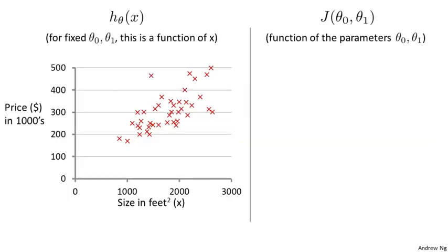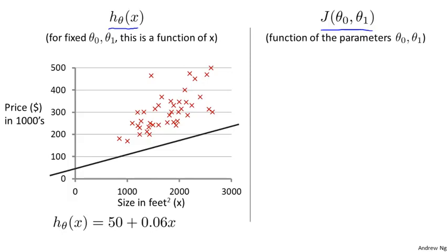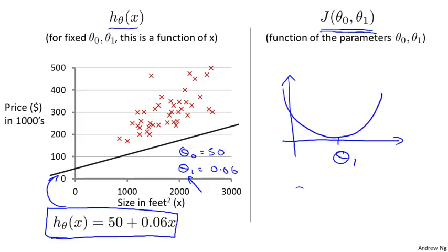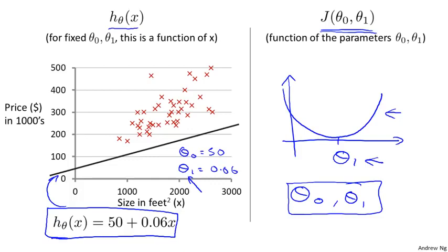Same as last time, we want to understand the hypothesis h and the cost function j. Here's my training set of housing prices, and let's pick some hypothesis — this is not a particularly good hypothesis, but if I set theta 0 equals 50 and theta 1 equals 0.06, then I end up with this hypothesis, which corresponds to that straight line. Given these values of theta 0 and theta 1, we want to plot the corresponding cost function on the right. When we only had theta 1, we drew plots as a function of theta 1. But now we have two parameters, theta 0 and theta 1, and so the plot gets a little more complicated.